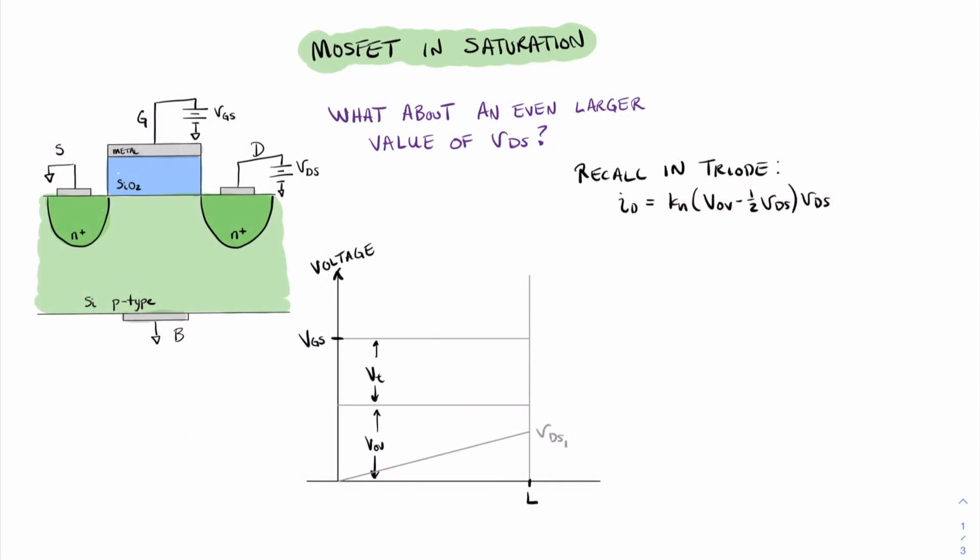The question then arises, what happens if we have a value of VDS that's even larger? Well, if we have a value of VDS that causes the channel shape to be trapezoidal, as we continue to raise that value of VDS, that shape will become more and more trapezoidal. And there'll be a point right when that shape becomes triangular. And this point is what we call the pinch-off point.